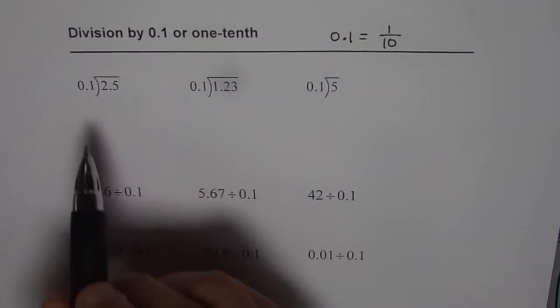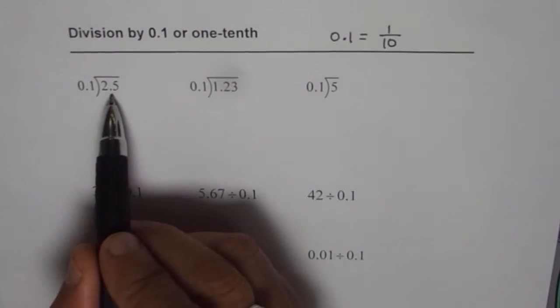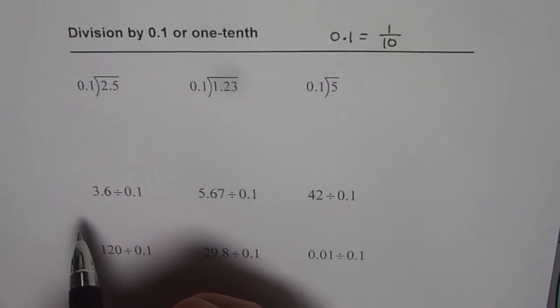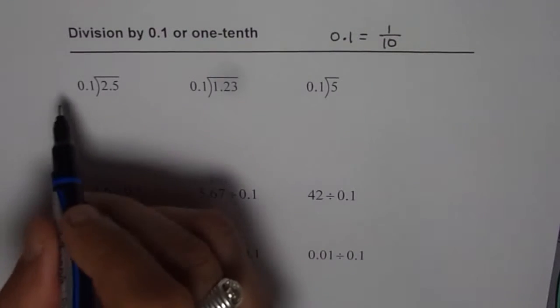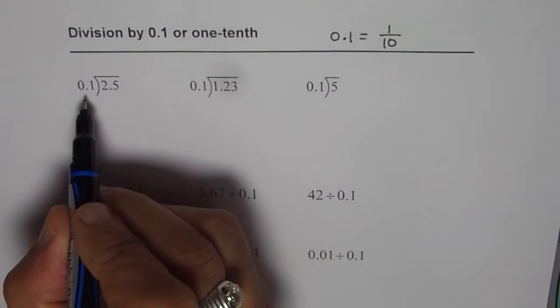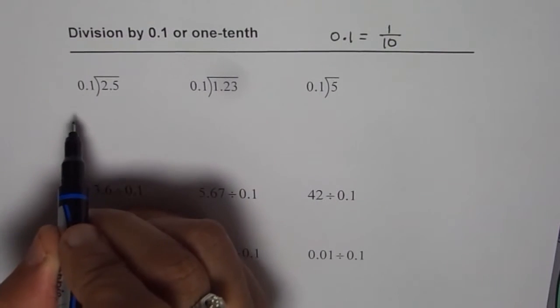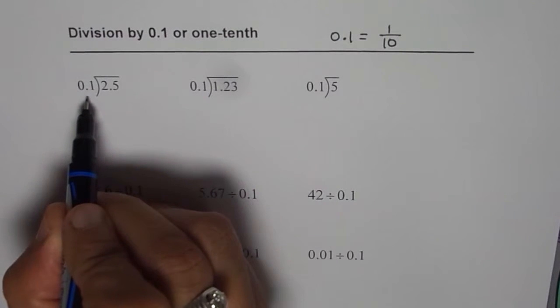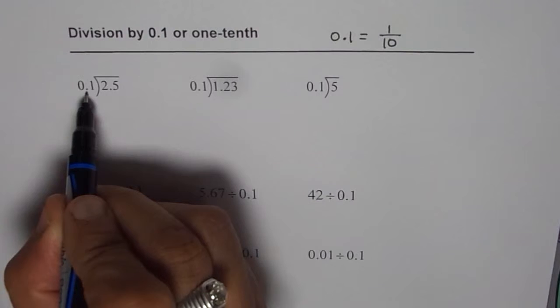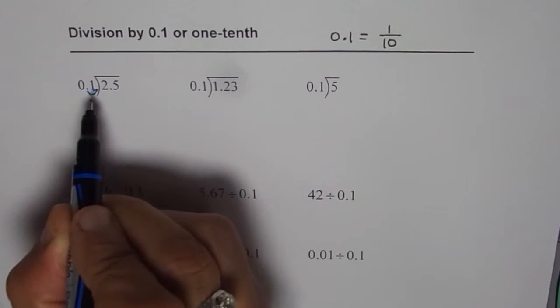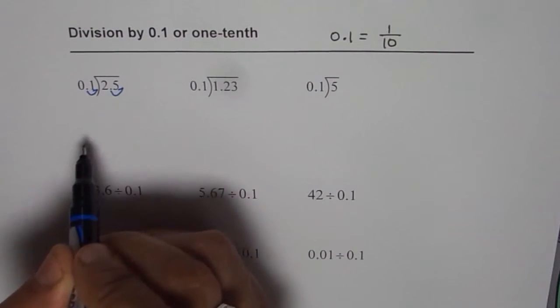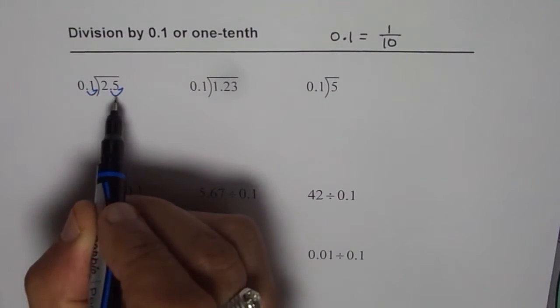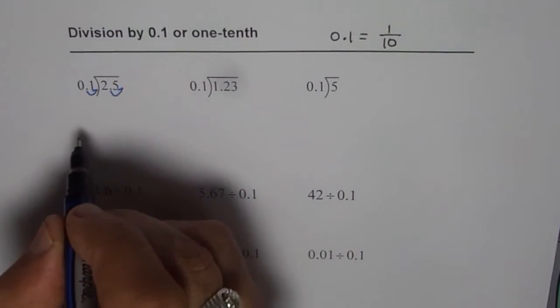Let us start with the very first one which is 2.5 divided by 0.1. So whenever we divide by decimal numbers, the first step is what? Divisor - we have to multiply so that we have a whole number here. In this case we have one number after decimal, so we need to move the decimal one unit to the right. So let us do it for both dividend and the divisor and then rewrite the question.